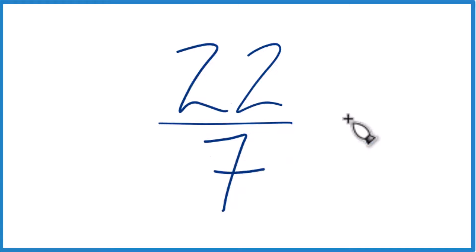So before we do that, we could try to simplify 22 sevenths, except it's already simplified. The only number that goes into 22 and 7 evenly is 1. That's our common factor. So this is already simplified.